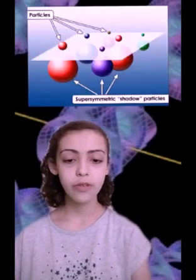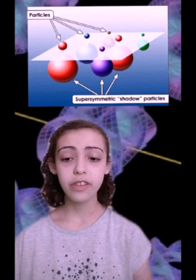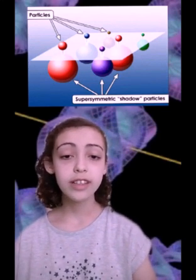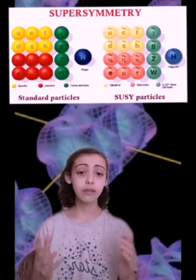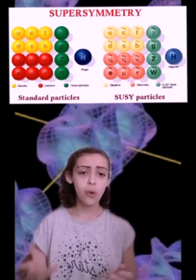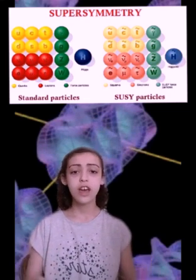This reminds me of a theory called supersymmetry. Simply put, it says that there is a partner particle for each particle in the standard model, and these partner particles existed during the Big Bang. For example, in the standard model we have the W boson, while its supersymmetric partner is the Wino.